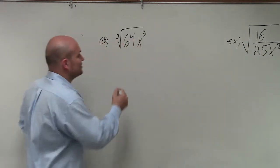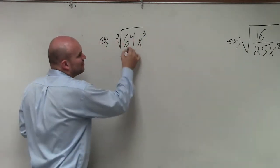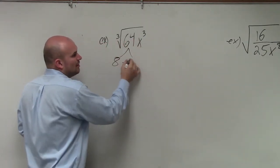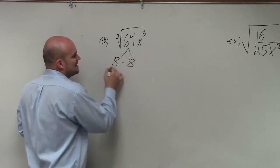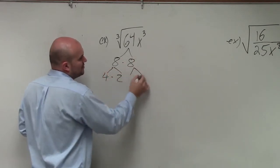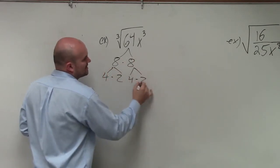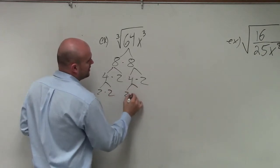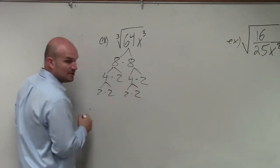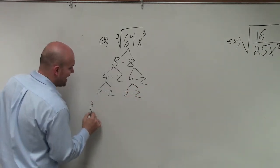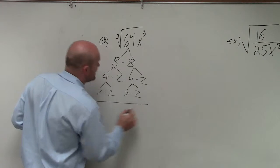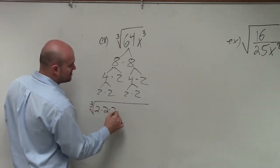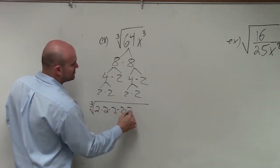The easiest way to do this is to break it down using prime factorization. So 8 times 8, then 4 times 2, 4 times 2, 2 times 2, and 2 times 2. That means I can rewrite 64 as 2 times 2 times 2 times 2 times 2 times 2.